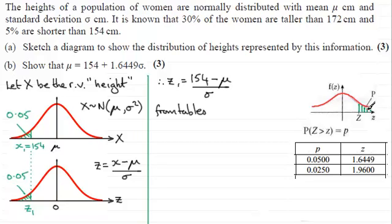But by symmetry we can see that this value of Z would be on the negative side, okay. So in fact the value that we want is that Z1 would equal minus 1.6449, okay.